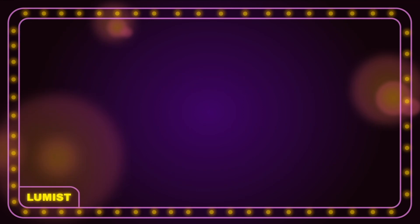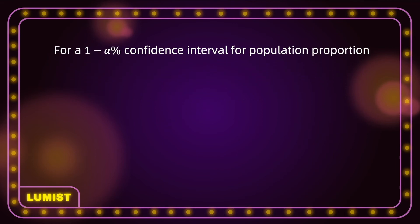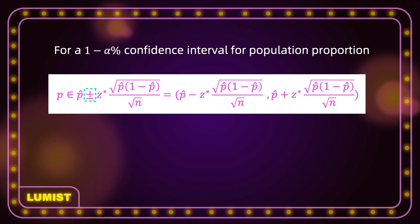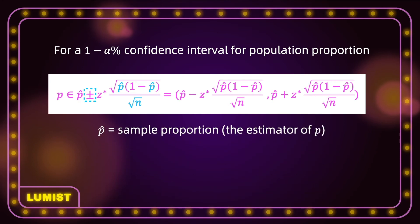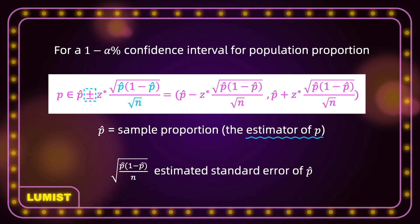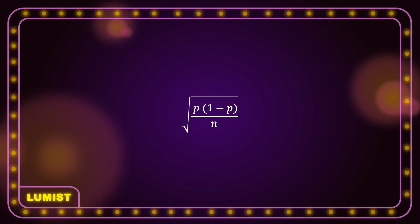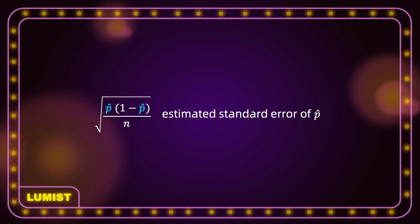Now let's talk about the confidence interval for population proportion. The formula for a (1 minus alpha) percent confidence interval for population proportion is: p-hat plus or minus z* times the square root of p-hat times (1 minus p-hat) divided by n. Here p-hat is the sample proportion and the square root of p-hat times (1 minus p-hat) divided by n is the estimated standard error of p-hat. Every p in the standard error formula is replaced by p-hat because in practice we don't know the population proportion p — instead we use p-hat to estimate p.